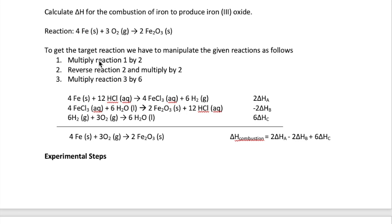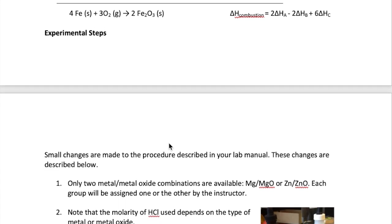This requires us to manipulate the given reactions and add them to give our target reaction. We can get there if we do the following. First, multiply reaction 1 by 2, which gives us this equation, and its delta H now is double the previous value. We also have to reverse reaction 2 and multiply that by 2, which gives us this reaction with delta H being equal to delta HB multiplied by negative 2. Then we have the last reaction, which we have to multiply by 6, and that gives us this reaction with its delta H being equal to 6 times delta HC. If you add these three reactions together and cancel out some of the species that are identical, you will get our target combustion reaction. So that means the value of our delta H of combustion comes from adding 2 times delta HA minus 2 times delta HB plus 6 times delta HC.